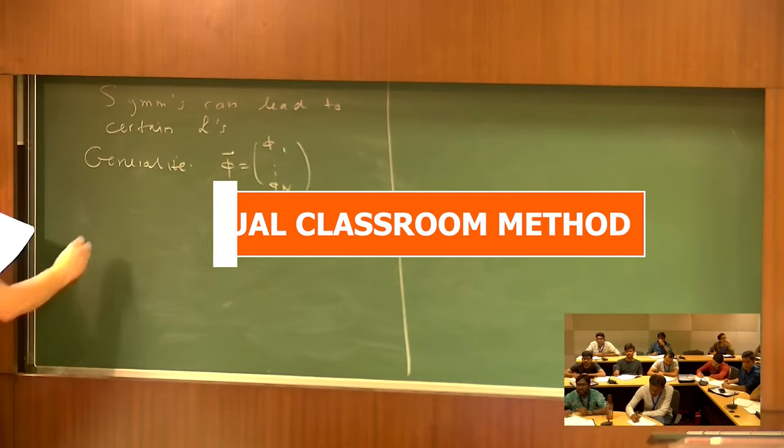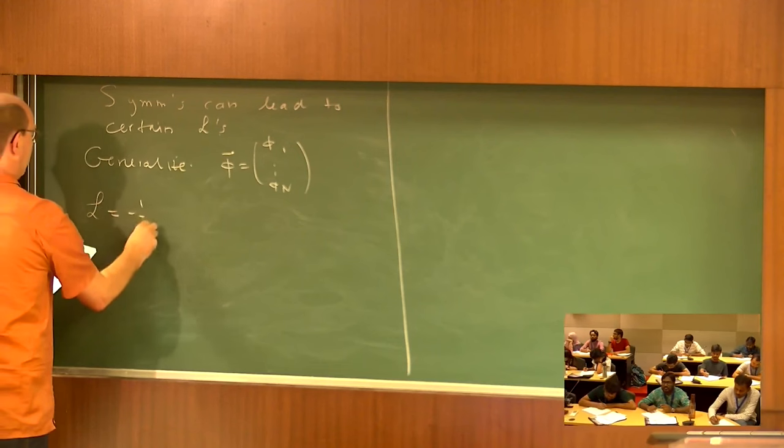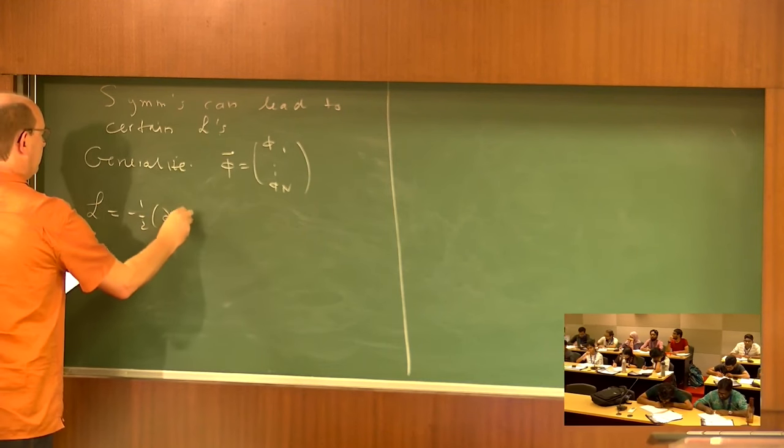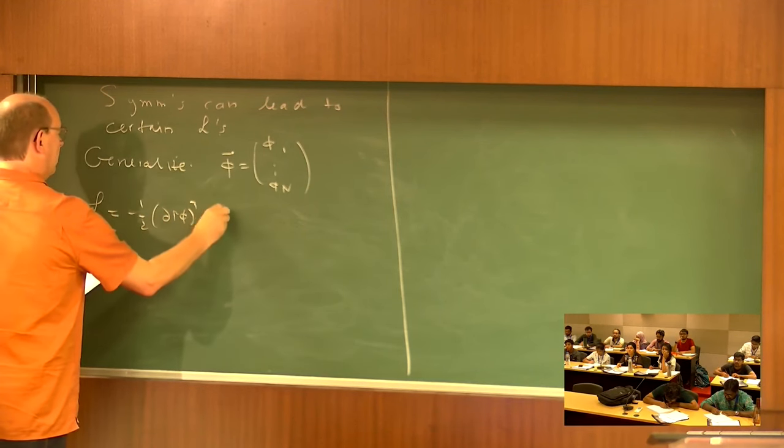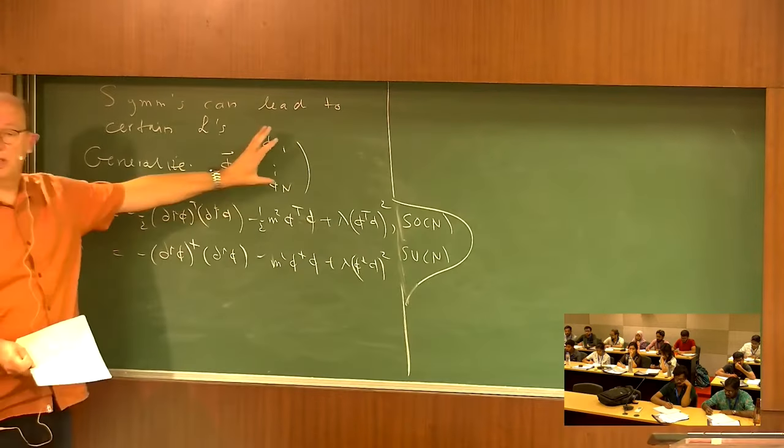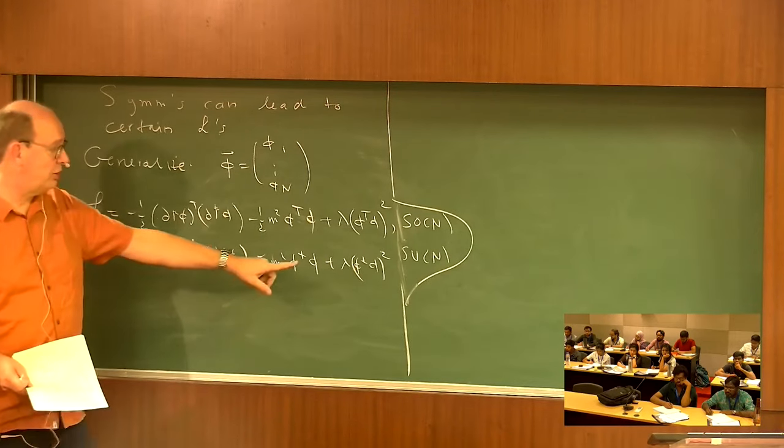So, under Lagrangian, I could write with that would be minus a half d mu phi transposed d mu phi rotations in an n-dimensional space and because complex is unitary here, it is SU n.